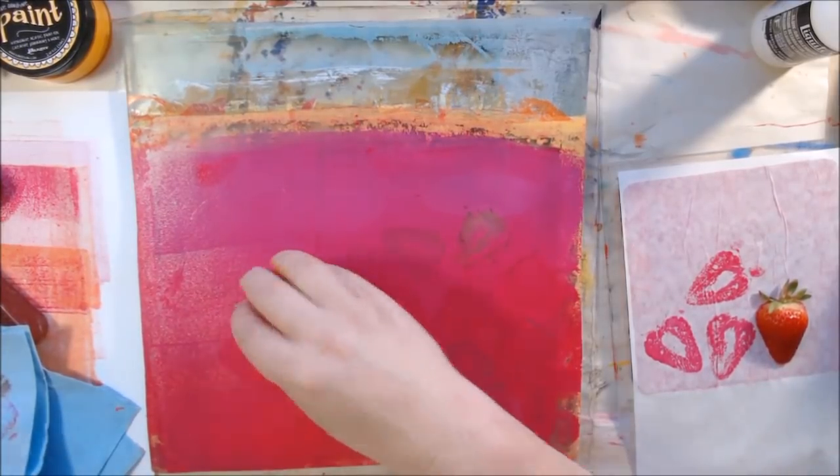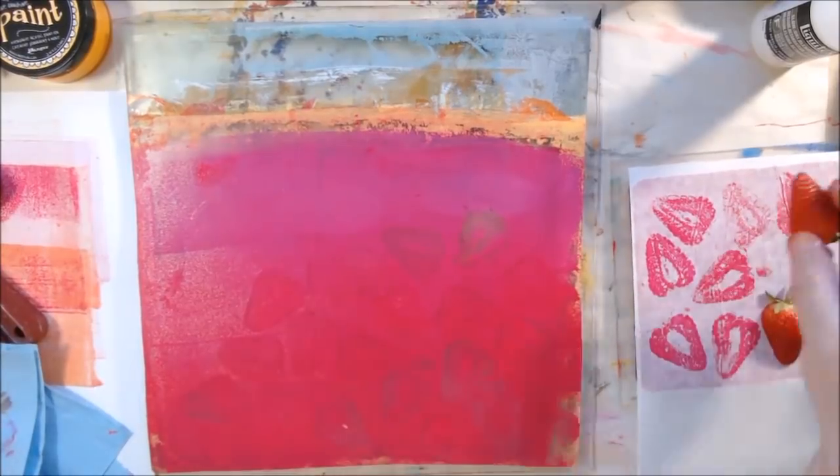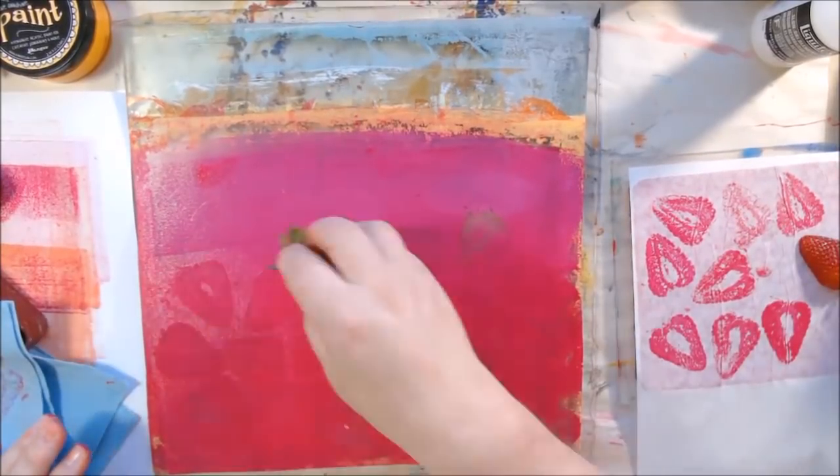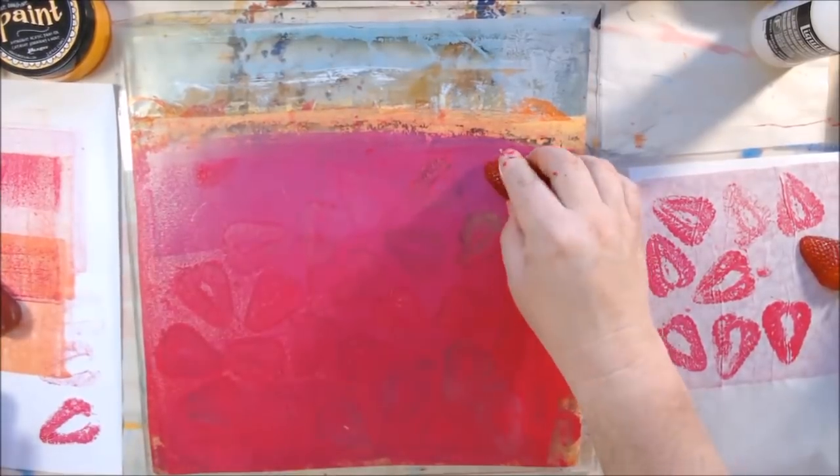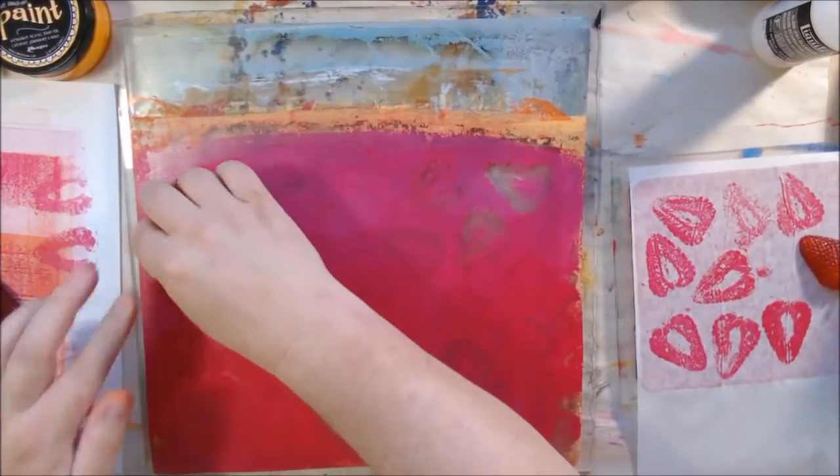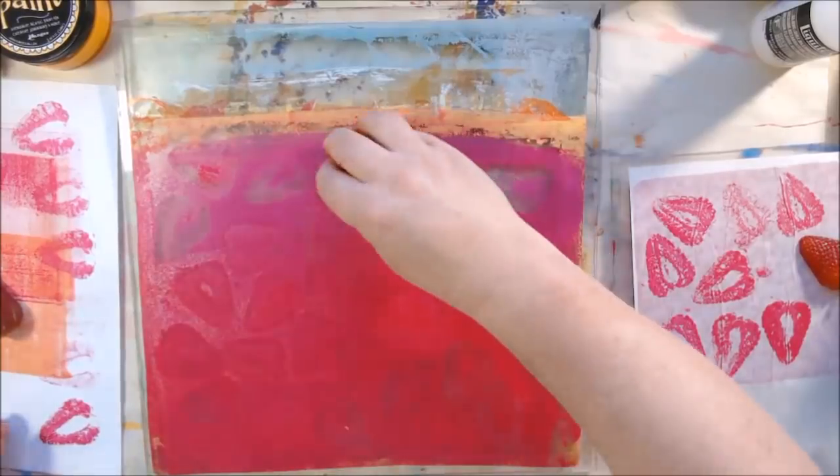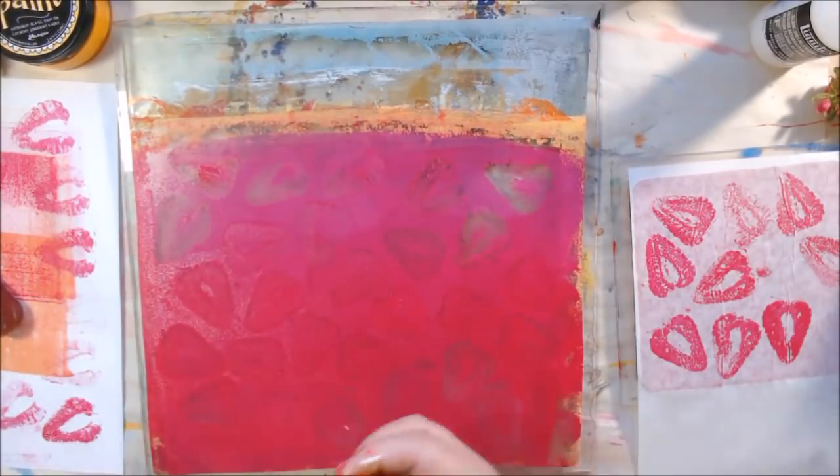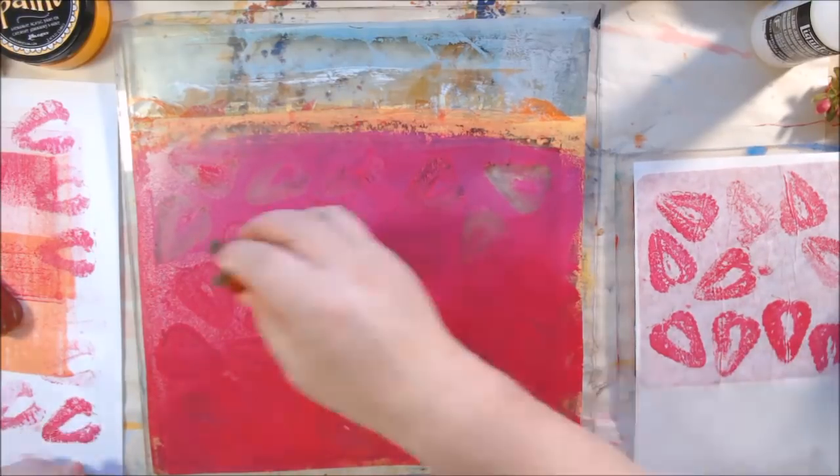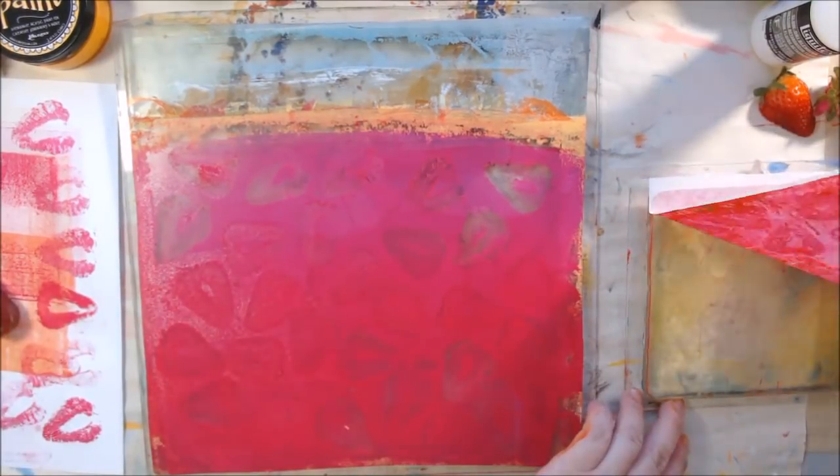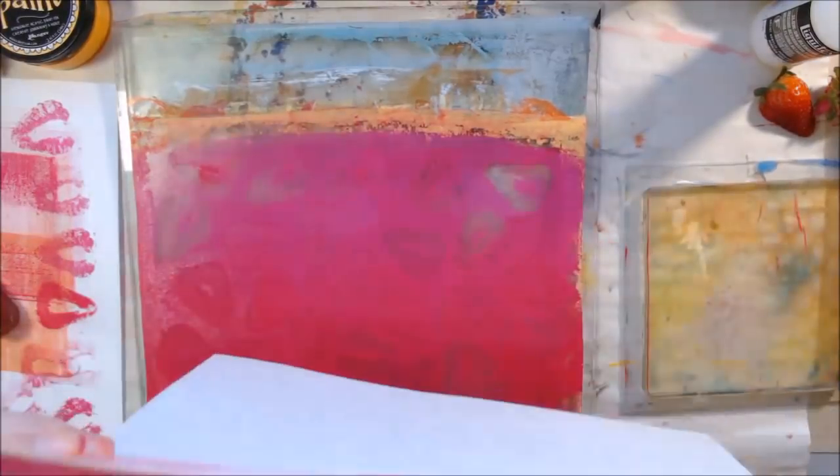They almost make a heart shape and I wanted those little tops to show as well, the stems or whatever they are, the leaves. They didn't really want to print though, so I end up doing something about that, but that paint is getting dry already.